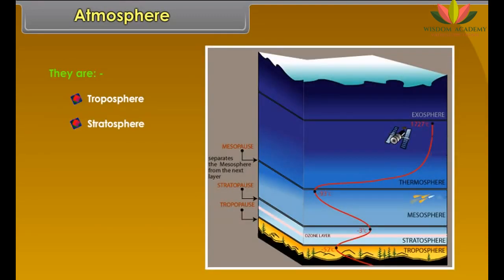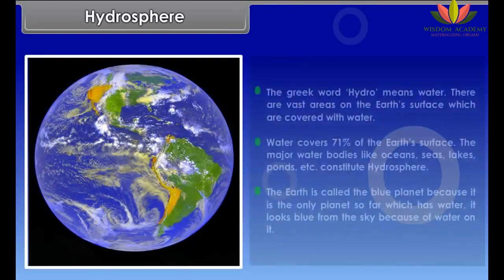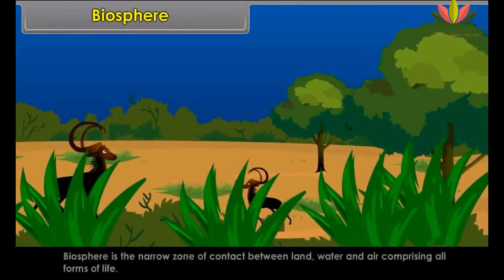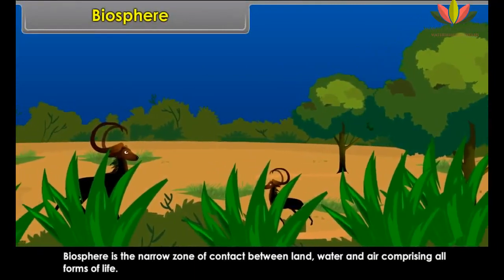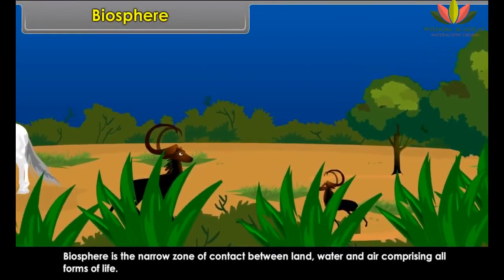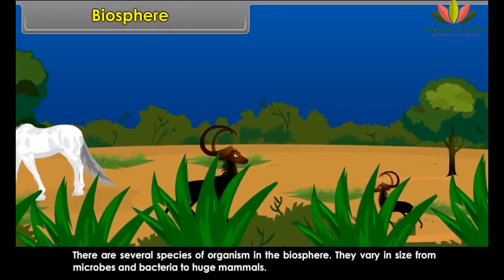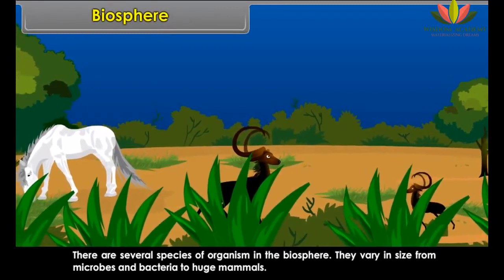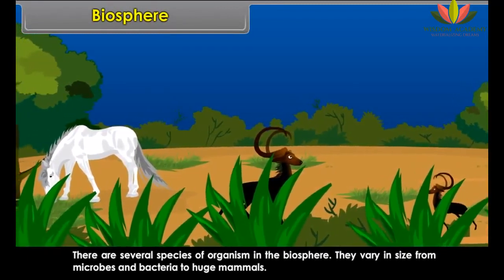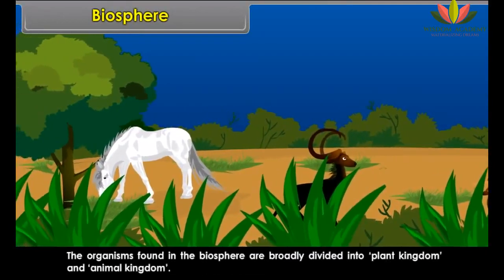The density of the atmosphere varies with height. It is highest at sea level and decreases rapidly with increase in height. The atmosphere extends up to a height of about 1,600 kilometers. The atmosphere is divided into five layers based on composition, temperature and other properties: troposphere, stratosphere, mesosphere, thermosphere and exosphere.